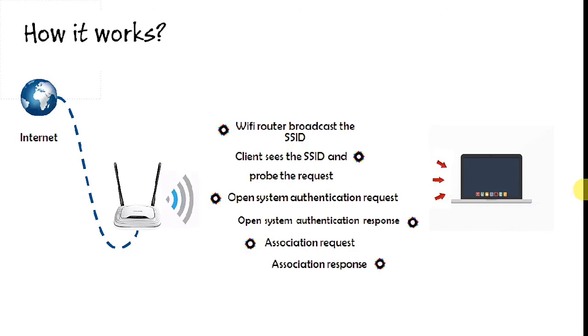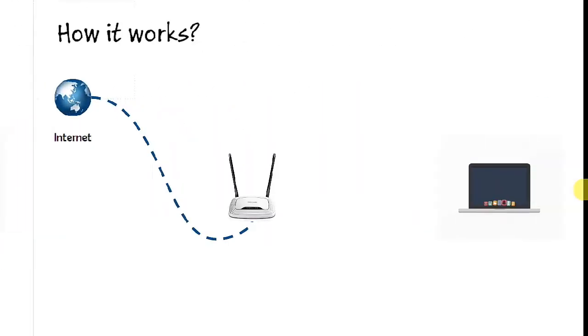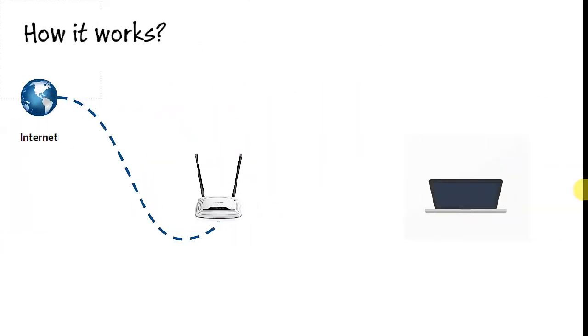So this is how the interaction happens between an access point and a client machine who wants to get connected to the router. Now the router and the client both send their network and data packets on different signals so they do not mix up with each other. You can see that both machines are sending their data packets on different signals.